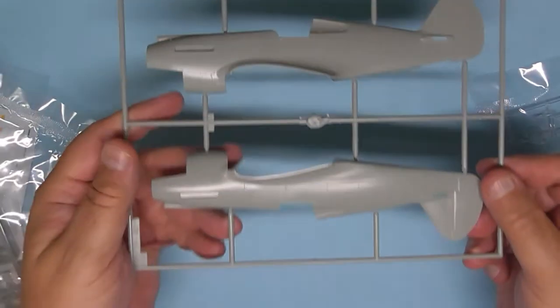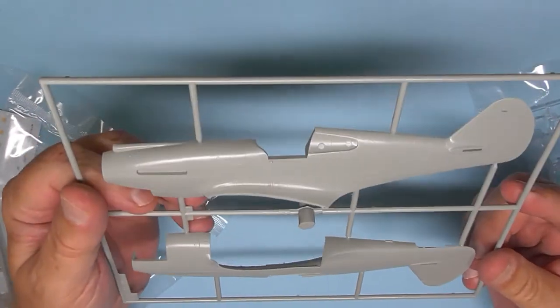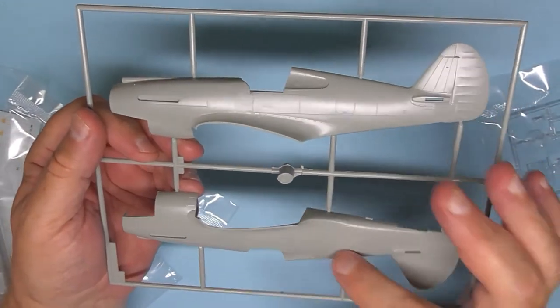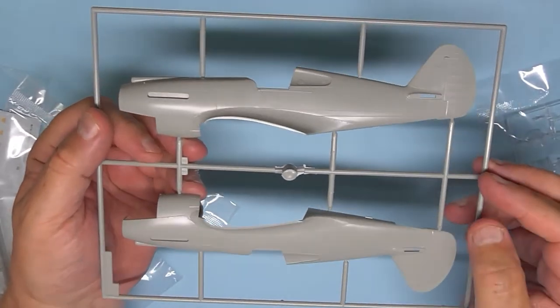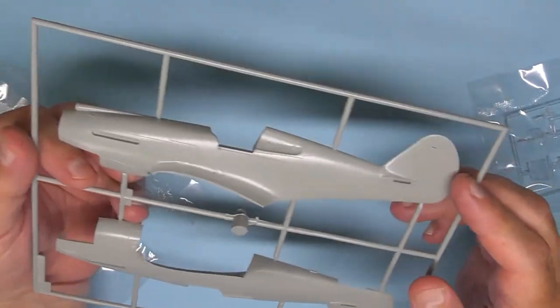We'll have a look at the fuselage and the glass first of all. So you've got your fuselage halves there. Recessed panel lines, nice and thin, nice and fine. Some ribbing on the tail for the fabric covered tail.